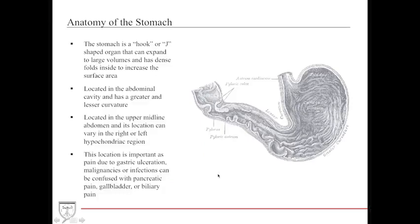The stomach is a J-shaped or hook-shaped organ that allows for large volume expansion during food consumption and contains numerous dense folds to increase inside surface area. It is located in the abdominal cavity with a greater and lesser curvature, situated in the upper midline abdomen. Its location can vary between the right or left hypochondriac region, and this can cause confusion in pain localization.